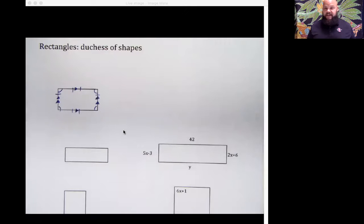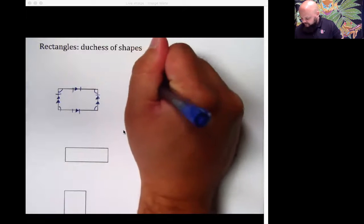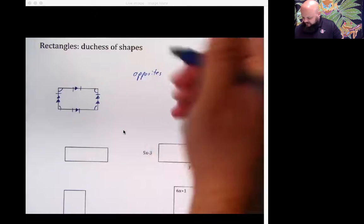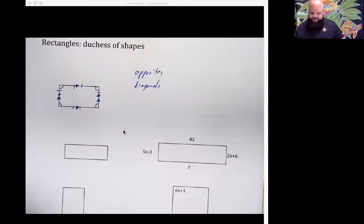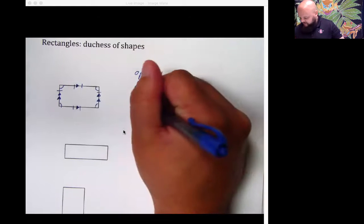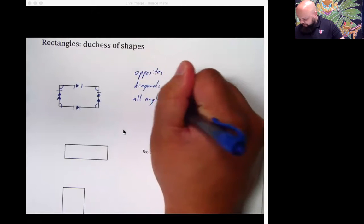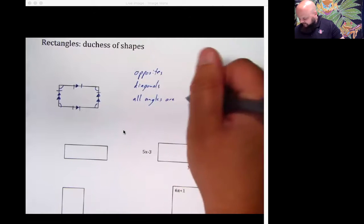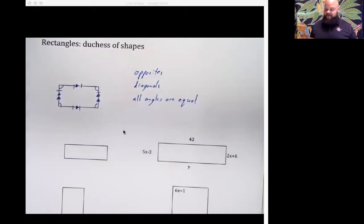So this means we're still going to have some of the same vocabulary. We're still going to be worried about opposites, and diagonals, and the like. But what a rectangle has is it's got all angles are equal. So let's check out what that means.